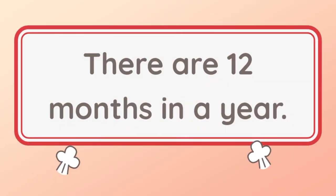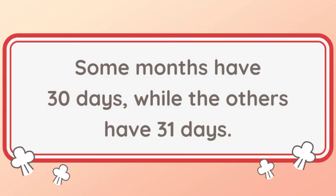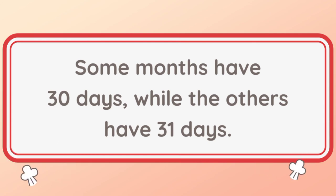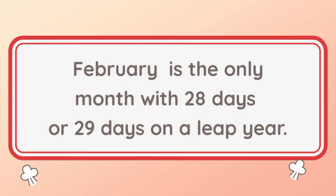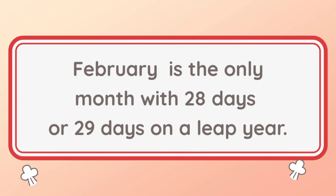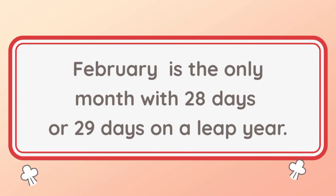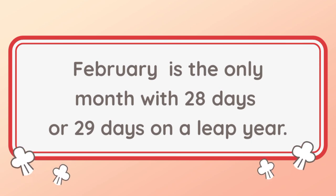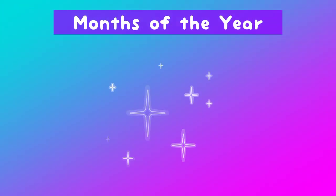Remember, there are 12 months in a year. Some months have 30 days while the others have 31 days. February is the only month with 28 days, or 29 days on a leap year. Again, let's say the months of the year in order.